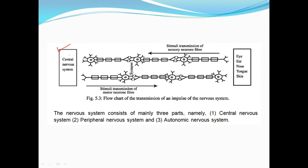The nervous system is called the brain and the peripheral nervous system. There are three types of nervous system: the central nervous system, which includes the brain; the peripheral nervous system; and the autonomic nervous system, which relates to sensory organs like eyes, ears, nose, tongue, and skin.